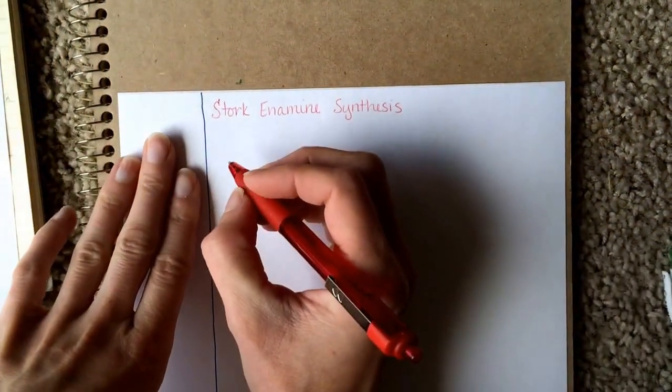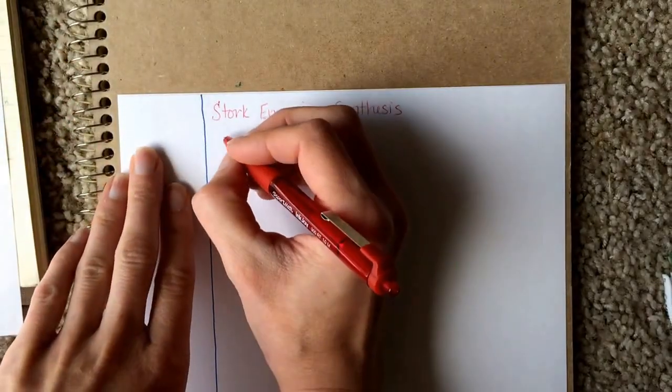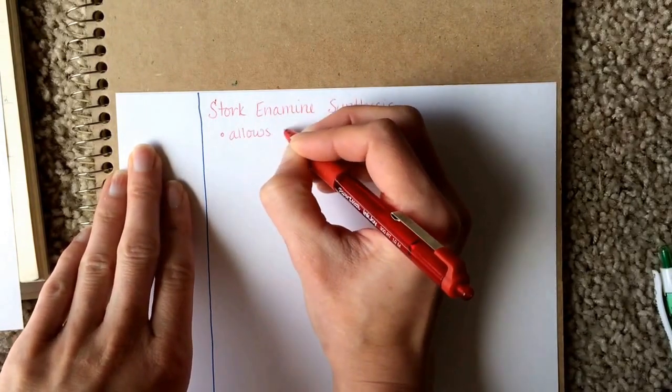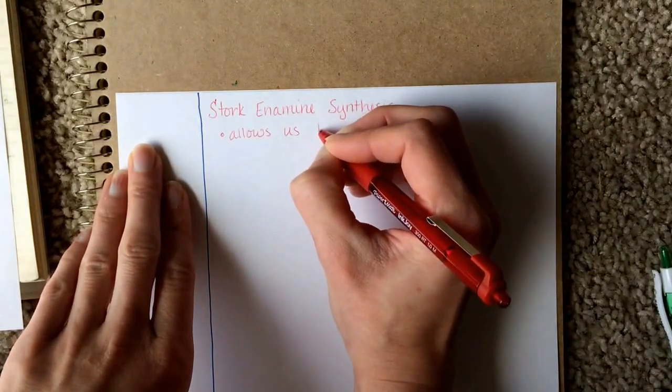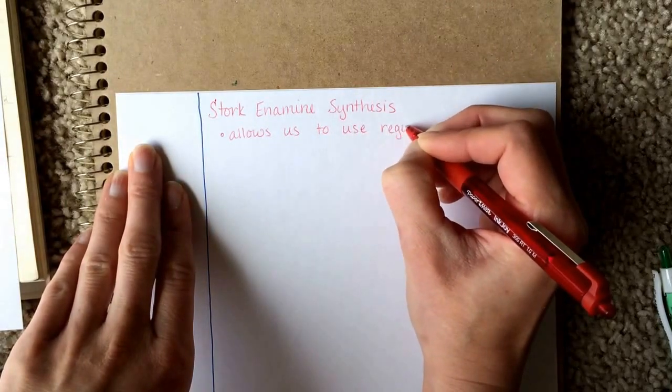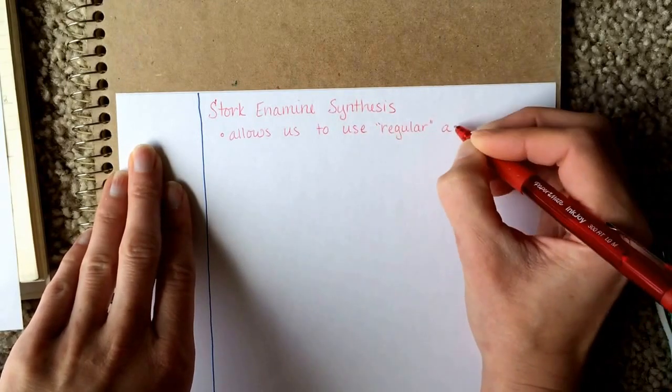What makes the Stork-Enamine Synthesis different from a regular Michael Addition reaction is that it gives us a way to use a regular aldehyde or ketone as a Michael donor.